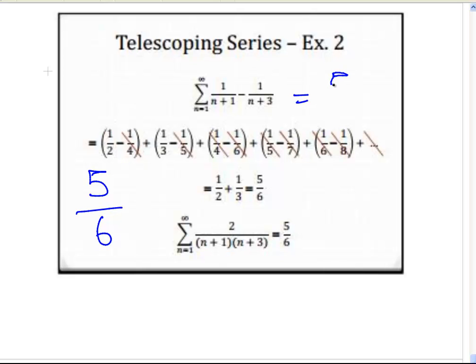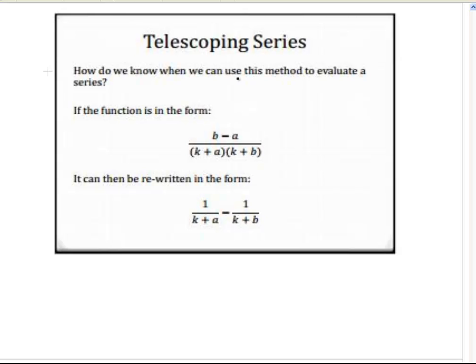How do we know to use this method to evaluate a series? If it has a polynomial of degree 2 — a quadratic — in the denominator that you can factorize into the form (k plus a)(k plus b), we can split it into two partial fractions. When we can factorize and split into two parts using cross-multiplication, that tells us to use the telescoping series approach. That's the end of this presentation.